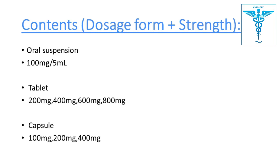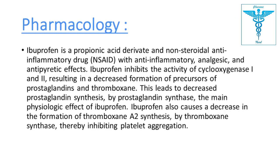Available dosage forms include: oral suspension at 100 mg per 5 ml and 200 mg per 5 ml (the 200 mg per 5 ml is also known as DS or double strength). Tablets are available in 200 mg, 400 mg, 600 mg, and 800 mg. Capsules are available in 100 mg, 200 mg, and 400 mg.